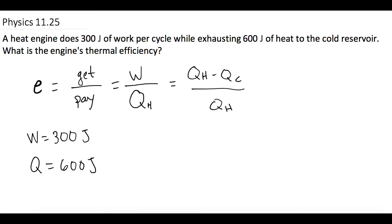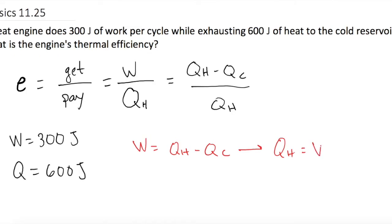But we don't know QH, so for any of these problems, we have to solve for that. Work is equal to QH minus QC. Solving for QH, we get QH equals work plus QC. So QH is equal to work, which they say is 300 joules, plus QC, which is 600 joules. QH is equal to 900 joules.